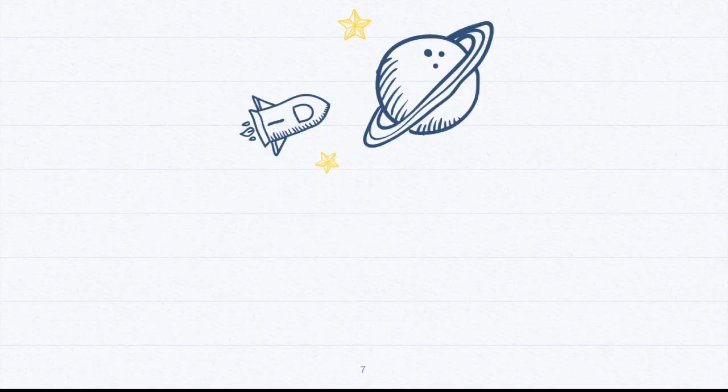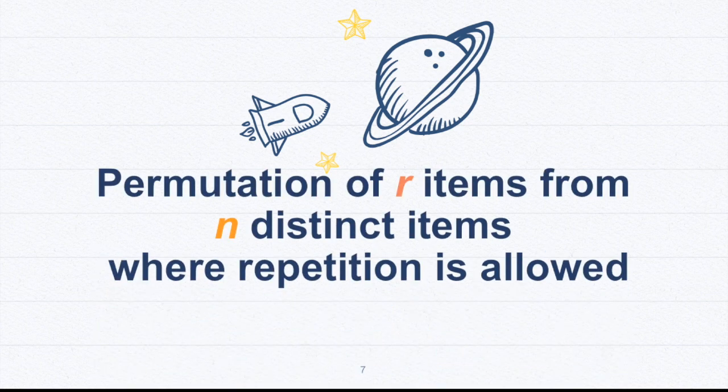So if you can see now the pattern, we can come up with a generalization that permutation of r items from n distinct items where repetition is allowed, in symbols, that would be n to the power of r.